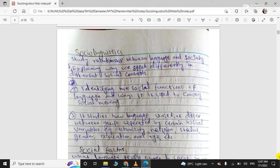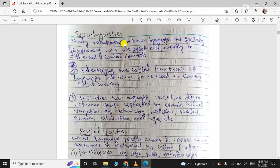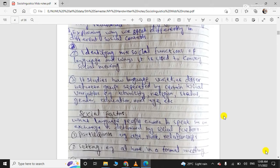Sociolinguistics explains why we speak differently in different social contexts. This is the significance - it helps us identify the social functions of language and ways it conveys social meaning. It studies how language varieties differ between groups separated by social variables: ethnicity, religion, gender, education, age. We will see how these affect language.